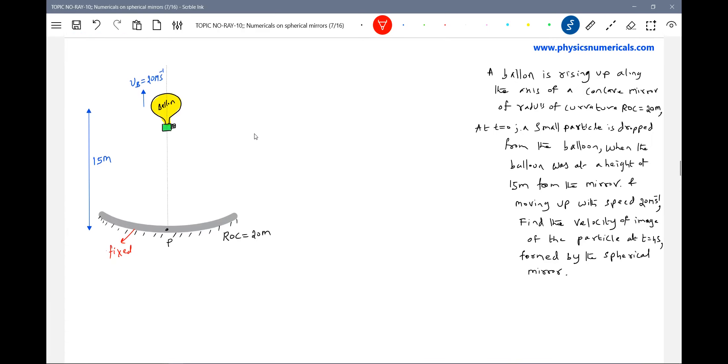You go back to the kinematics. If a balloon is ascending, then if I drop a particle due to inertia of motion, the particle will also have the velocity of the balloon. So what is the velocity of this particular particle? It should be that of the velocity of balloon. And where that particular particle is there at a distance of 15 meters.